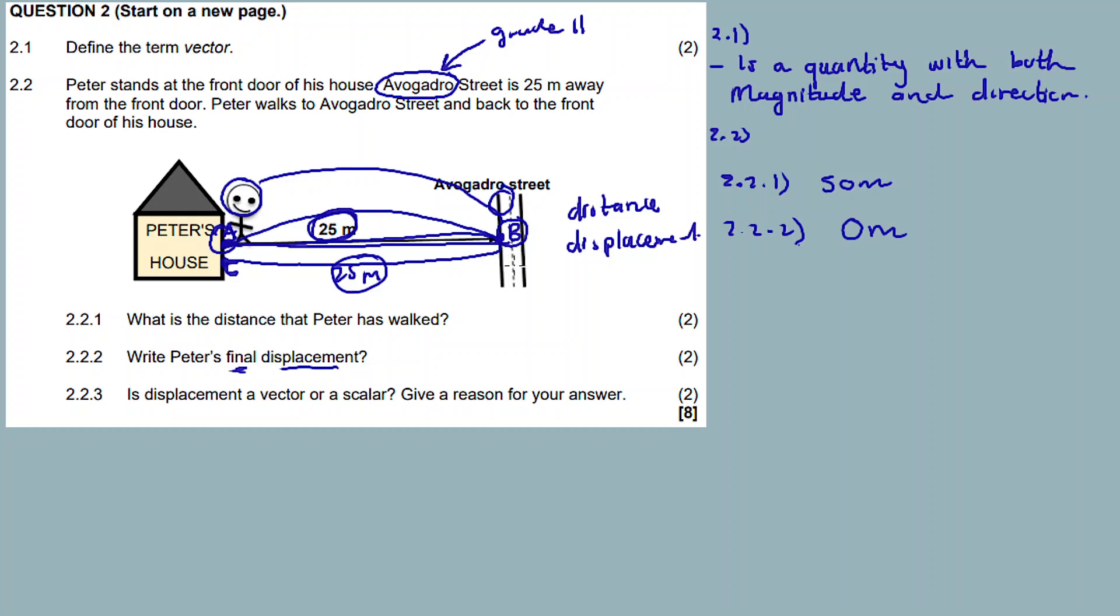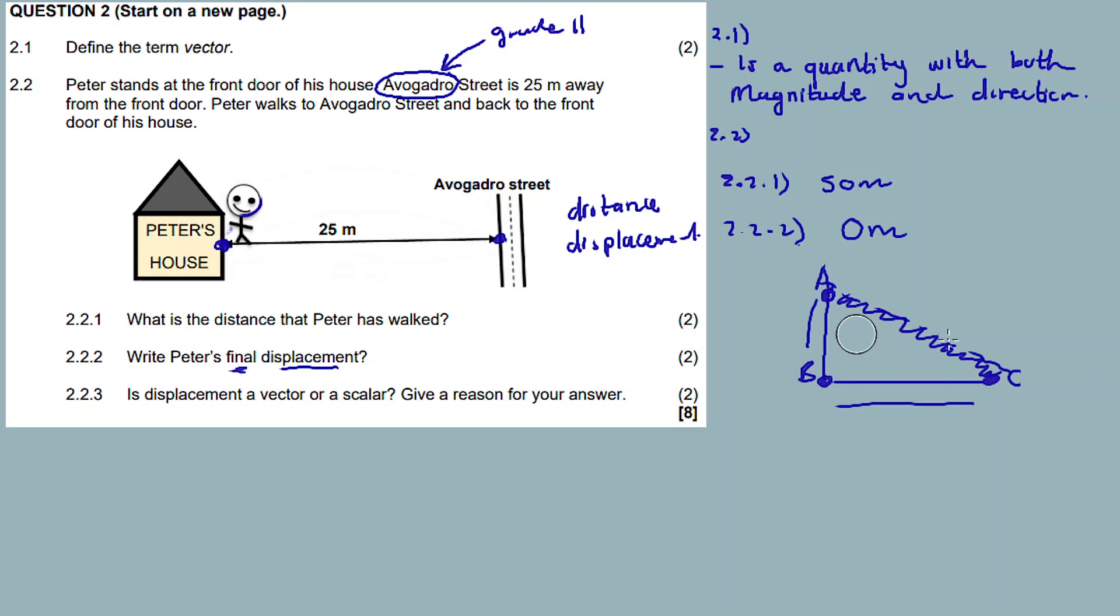However, if Peter started at one corner, walked to point B at Avogadro Street and stayed there, then there's a change in position. The change in position would be the length or path between A and B. Therefore his displacement would be 25 meters, the same as the distance - if and only if Peter starts at one corner, walks to point B at Avogadro Street and stays there. But for this question, displacement is zero because he started, traveled, and returned - there was no change in position. Another example: I start here, go there, but if I return to where I started, this is my displacement. If I calculate the path, the length of this path, that's my displacement. The distance is this plus this. This is the important concept to understand about this question. Sometimes students get this wrong.